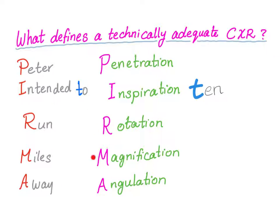There are five characteristics that should be fulfilled: penetration, inspiration, rotation, magnification, and angulation. The mnemonic to remember them is 'Peter Intended To Run Miles Away,' where the 'T' stands for 'ten' — referring to inspiration.